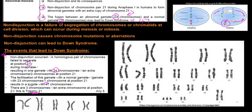Down syndrome is usually shown using a karyotype. Whenever you get a karyotype study, quickly run through it and see if there's anything unusual — if you are looking for Down syndrome, go straight to chromosome pair 21.